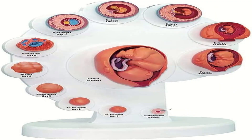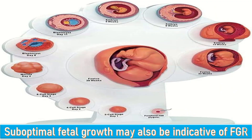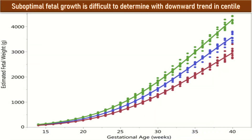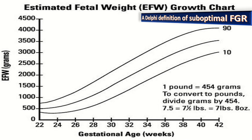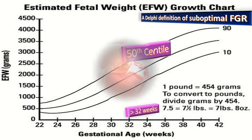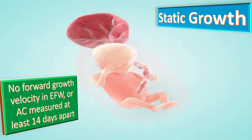Suboptimal fetal growth may also be indicative of fetal growth restriction and can be diagnosed when a previously well-grown fetus fails to maintain adequate growth during pregnancy. Suboptimal growth is difficult to define, with a pattern of slowing growth velocity — a downward trend in centile. The Delphi consensus defines suboptimal fetal growth as the abdominal circumference or estimated fetal weight crossing more than two quartiles on non-customized growth centiles after 32 weeks, equivalent to the 50th centile.